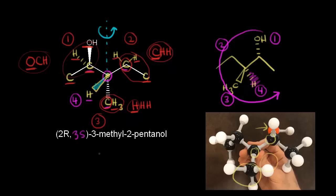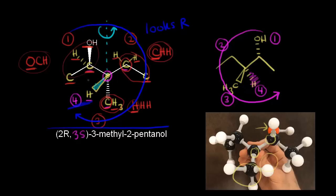We can finish the name by writing 2R, 3S-3-methyl-2-pentanol. Now, you didn't have to do the whole rotation trick. There's a shortcut: if your hydrogen is coming out at you in space, you can just look at groups one, two, and three going clockwise — it looks R. But since the hydrogen is coming out at you instead of going away, you simply reverse it. If it looks R with the hydrogen coming out at you, it must actually be S. That's a nice trick that means you don't have to rotate the molecule in your head.